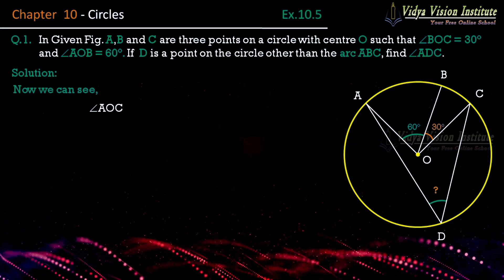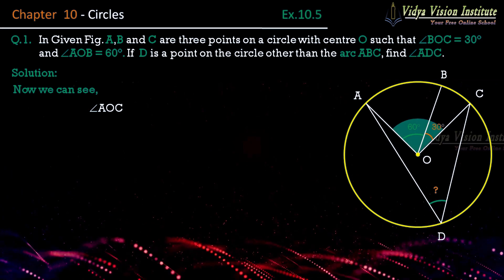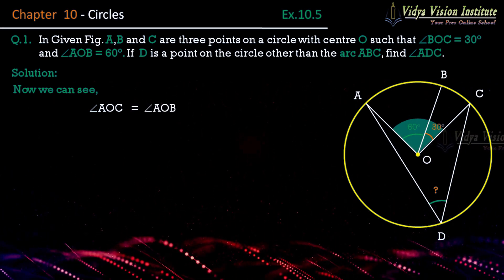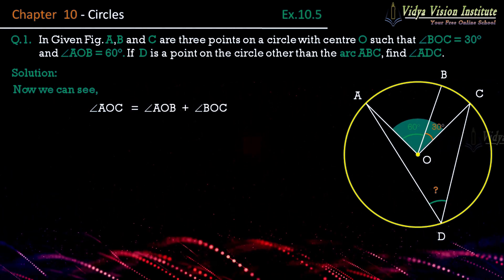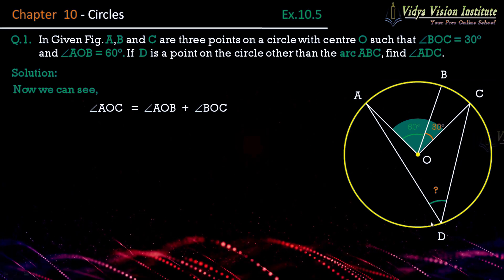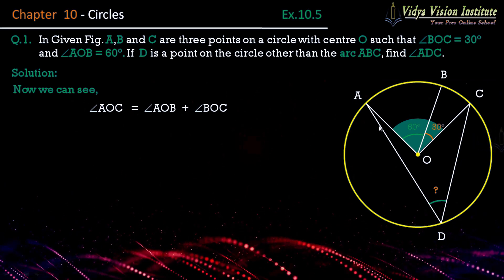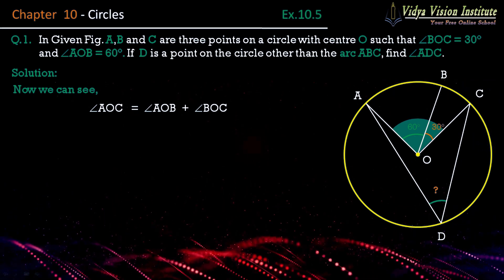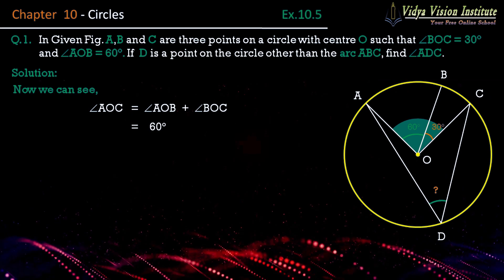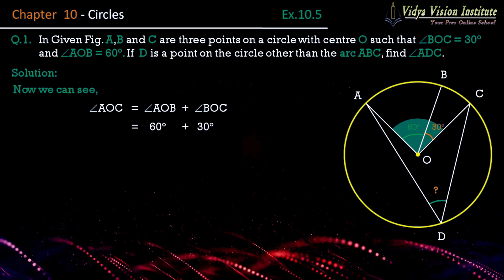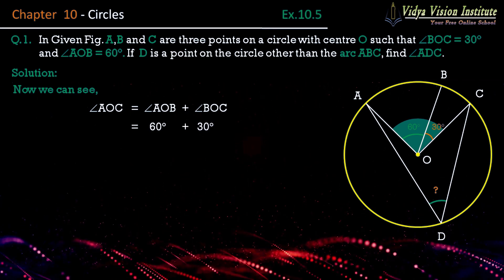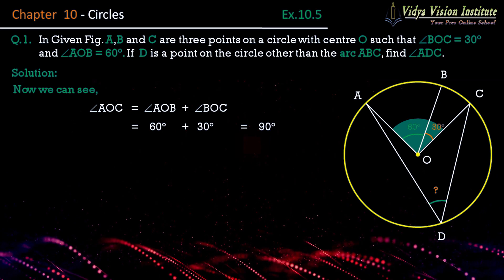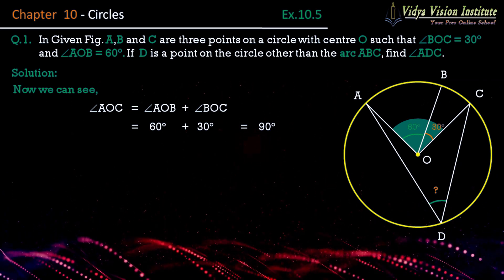So solve kar lete hain. Jaisa ki hum dekh sakte hain, angle AOC — that is this angle — is equal to angle AOB plus angle BOC. Now angle AOB is equal to 60 degrees, plus 30 degrees. Hence angle AOC is equal to 90 degrees.